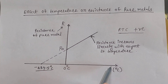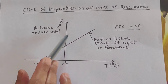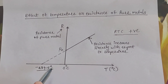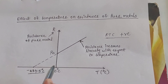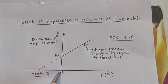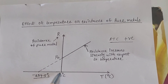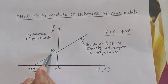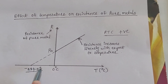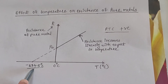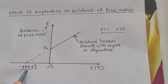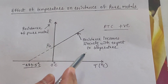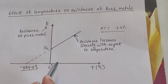Looking at the graph of resistance versus temperature for copper: at 0°C, resistance is not zero — it has some value R₀. Resistance reaches zero at −234.5°C. This covers the effect of temperature on resistance for pure metal.